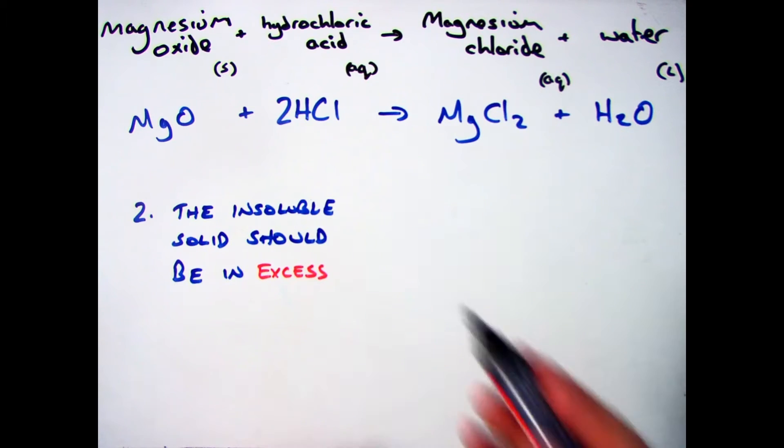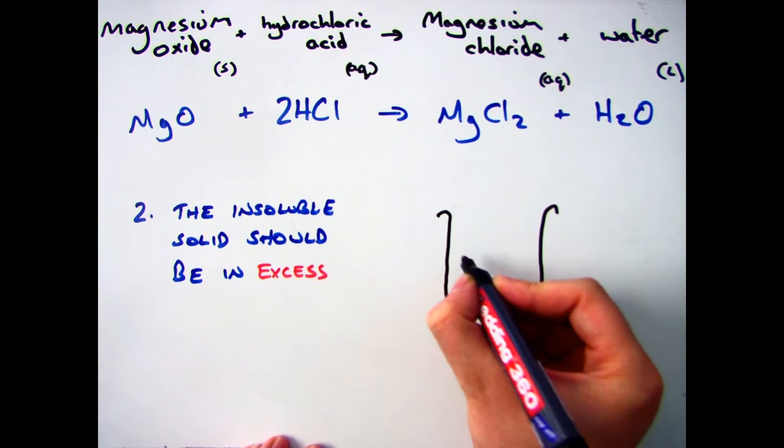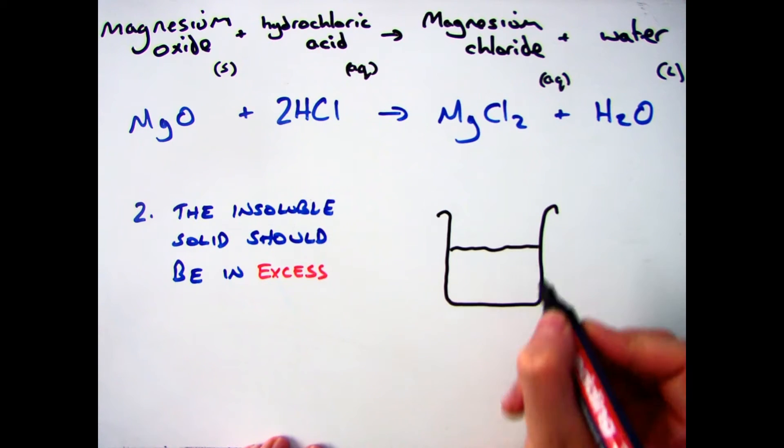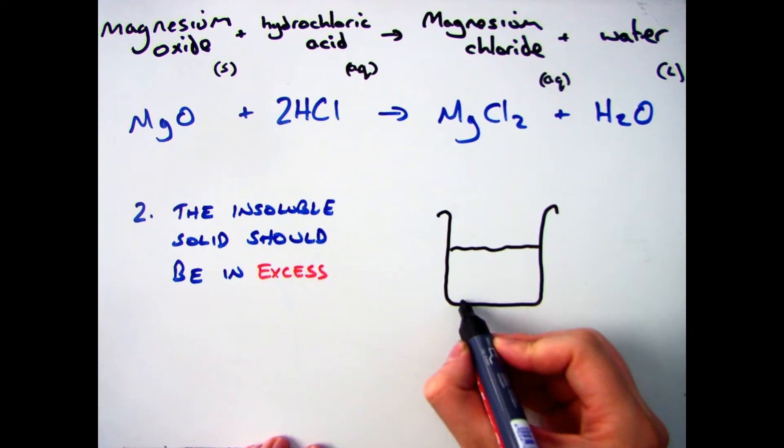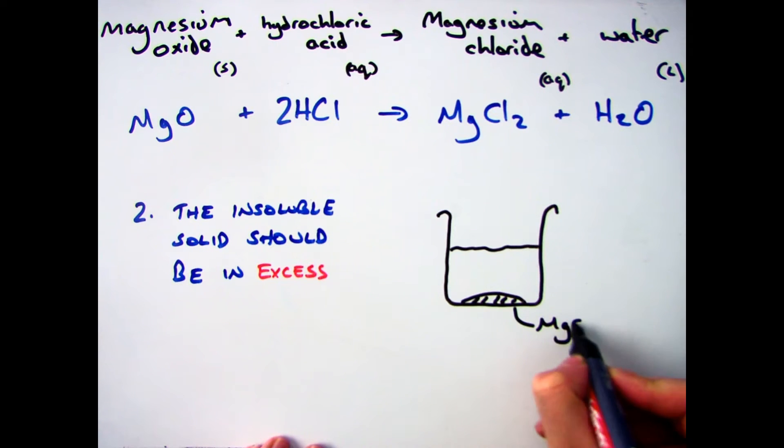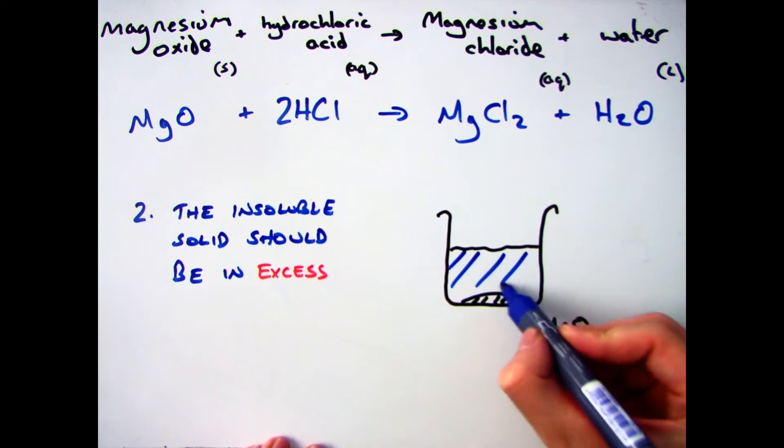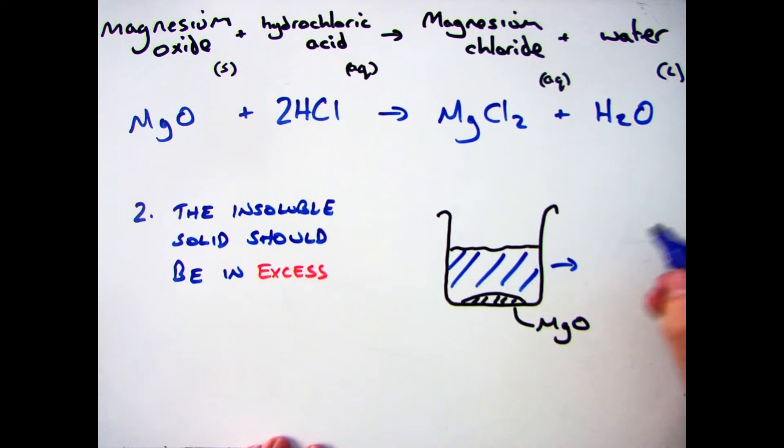Now you know how to do the actual practical, what you need to know is why the insoluble solid should be in excess. So for the reaction between magnesium oxide and hydrochloric acid, the first thing you want is your magnesium oxide, which is your insoluble solid. As you can see I've put this into a beaker here, and then I've got my hydrochloric acid, which is my aqueous solution. So I'm going to add the two of them together.